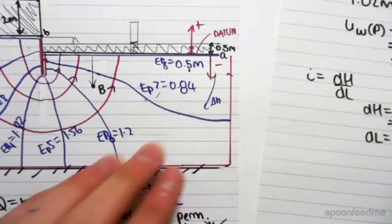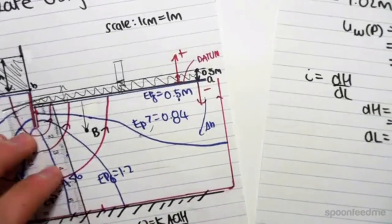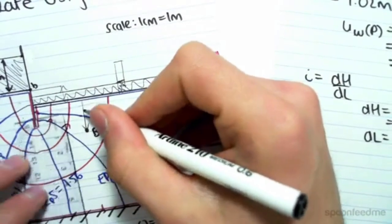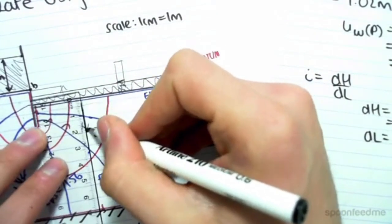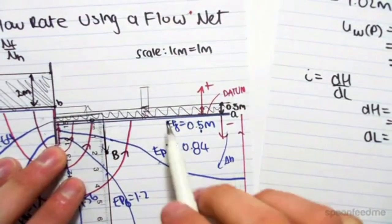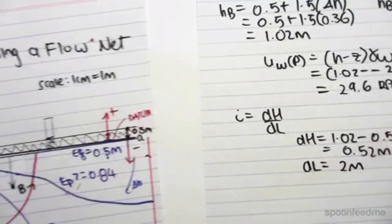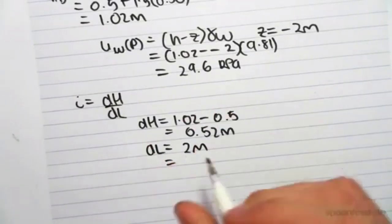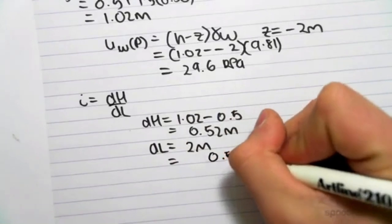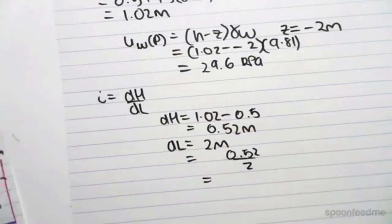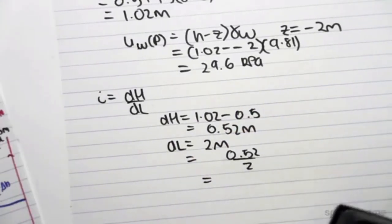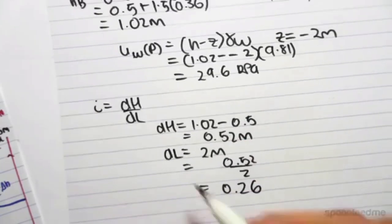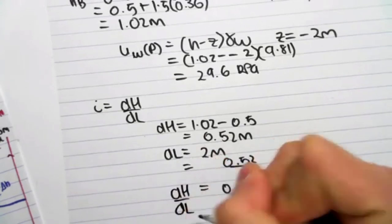And the change in length, we've pretty much just worked it out before, but we would just scale it off our diagram. It's going to go along a flow tube, or like a flow tube, so it's roughly coming vertically down. So it's 2 centimeters, which we know from our scale is 2 meters. So dL is 2 meters. Then we can find the hydraulic gradient, which is dH divided by dL. So 0.52 divided by 2, our hydraulic gradient is 0.26.